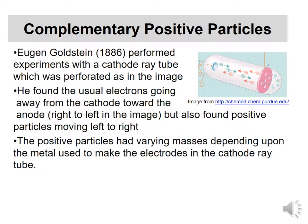Around 1886, before Thomson, Eugene Goldstein recognized that in the cathode ray tube — which had been known for about 10 years — if he cut holes in the solid disk electrode and looked for particles coming back the other way, sure enough positive particles were coming back through those holes. So now we find that atoms have both positively and negatively charged particles. The negative particles are the same no matter what the atom is, but the positive particles have different masses depending on what element they are.